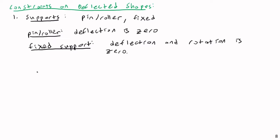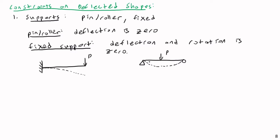For example, if we have a cantilever beam, this is a fixed support. When I apply a point load P, the deflected shape must look something like this. At the left end where the fixed support is, both deflection and slope are equal to zero. The fixed support, by definition, prevents deflection and prevents rotation. On a simply supported beam, I apply a point load P and get a deflected shape with no deflection at the supports, but I am free to have whatever rotation is necessary.